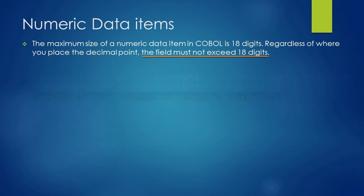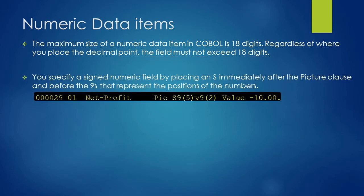Under many circumstances you may want to handle numbers that are both positive and negative, or signed numbers. You specify a signed numeric field by placing an S immediately after the Picture clause and before the 9s that represent the position of the number. However, like the decimal point, the sign does not take up any storage position.